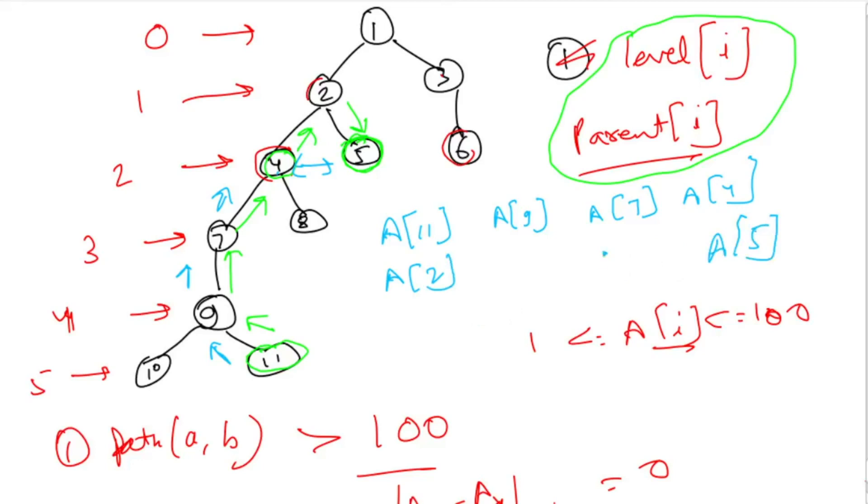We move a4 to a2 and we move a5 to a2. We don't need to include this node multiple times, so our sequence is a11, a9, a7, a2, a5.